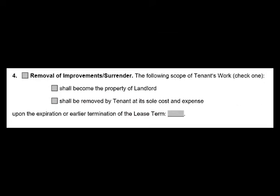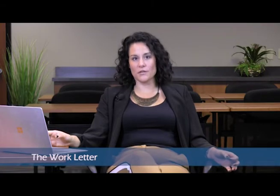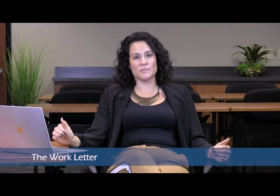Section four clarifies the ownership of improvements and the removal obligations at term termination or expiration. Section four is an optional box — note that because that will become important when we talk about other lease provisions that deal with alterations and tenant improvements. Section four states that the following scope of tenant's work either shall become the property of landlord or shall be removed by tenant at its sole cost and expense. This clause also provides a free form field for you to specify exactly which scope of improvements is either to become the property of landlord or is to be removed by tenant. This is going to be important for you to coordinate with other areas of the lease so that what you put here is consistent with the other areas dealing with alterations and tenant improvements.